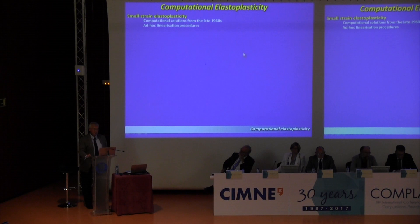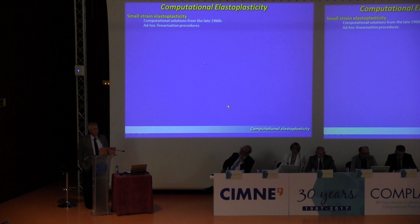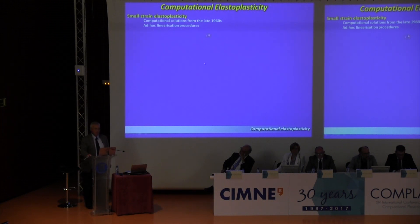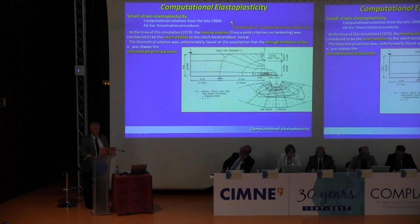Computational plasticity really started in the mid to late 1960s, where we began actually producing some solutions. But the linearization procedures we used were very ad hoc — we just followed intuition, if you like, to actually linearize a problem. But even at that stage, you could demonstrate that the computational solutions were really beneficial.